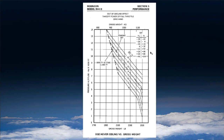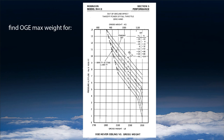Let's have a look at a performance chart. In our example we use the Robinson R44 Raven 2. On the left side we see the pressure altitude; down here is the gross weight in pounds or kilograms; and we have OAT lines and an ISA line.